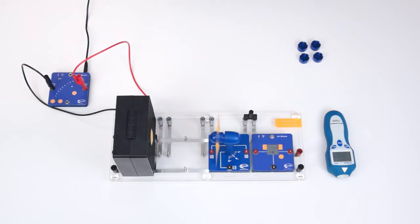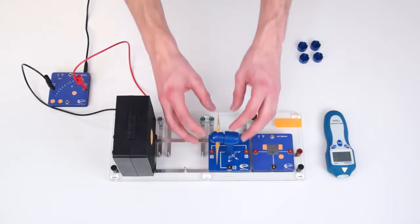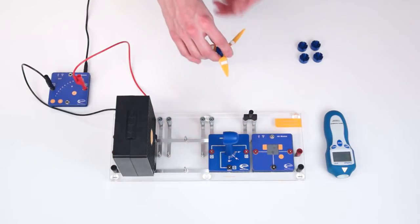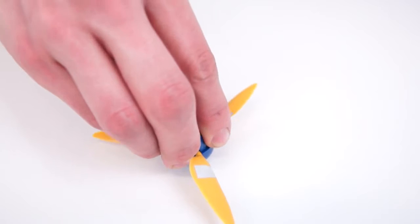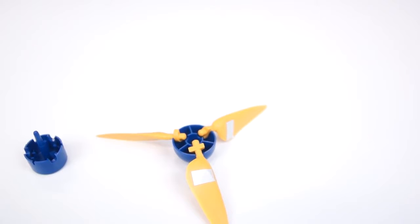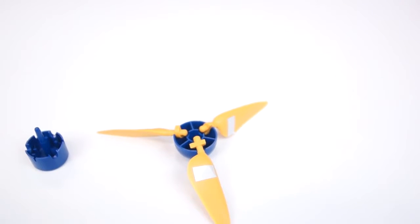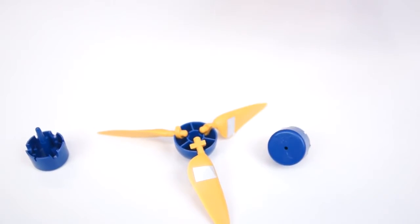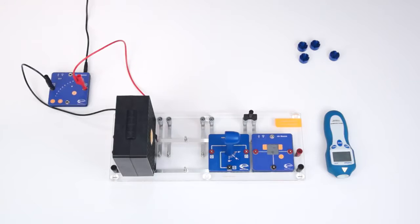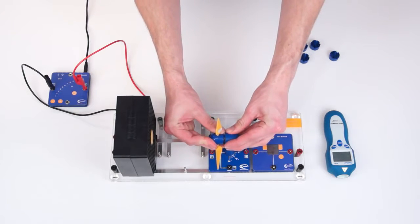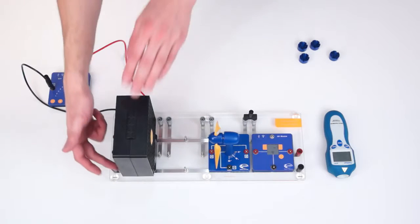For another measurement we now change the pitch angle and switch the hub. For this we turn off the wind machine and remove the rotor from the model. Then we press the wind rotor first with the tip on the table to open the hub. The new rotor is constructed in the same way as the previous one. For our second measurement we take a pitch angle of 50 degrees. Once it is ready we put it back on the wind generator. Then we start the wind machine and carry out the measurement in the same way as before.